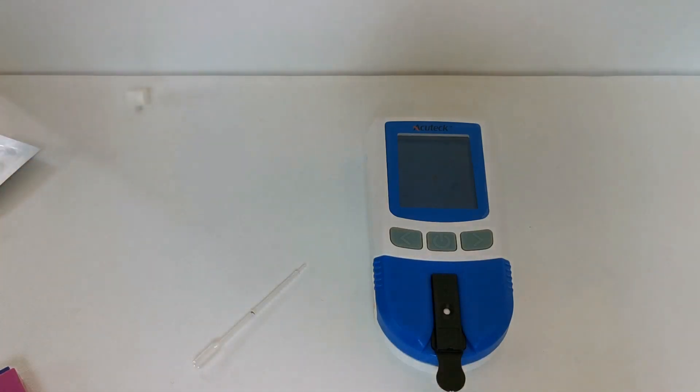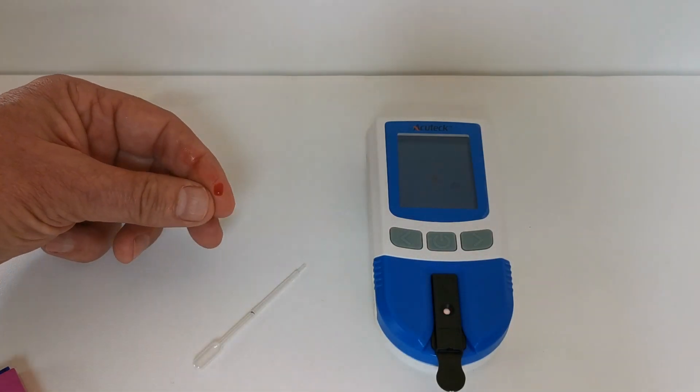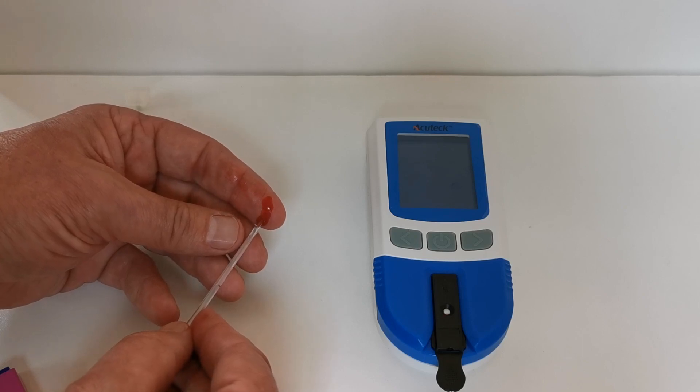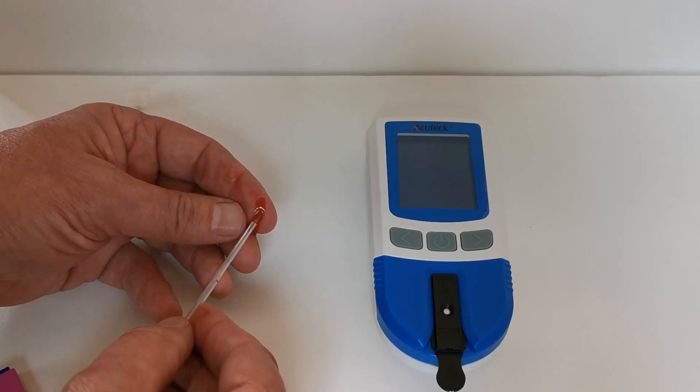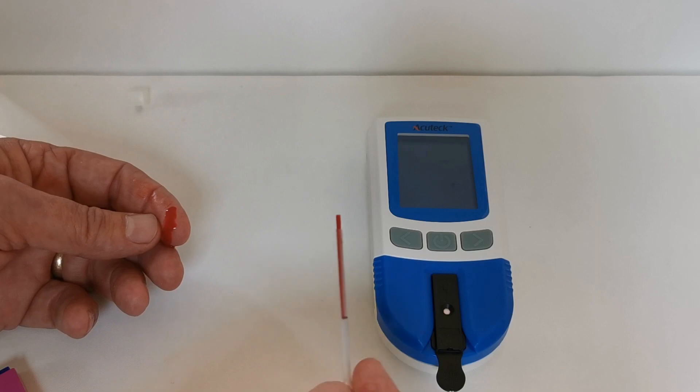You wipe the first droplet away and then squeeze the finger to allow a good second droplet to form. Then using the pipette, just put it sideways and allow it to naturally fill. You can see that it does so, and as soon as it reaches that black mark it should stop filling.